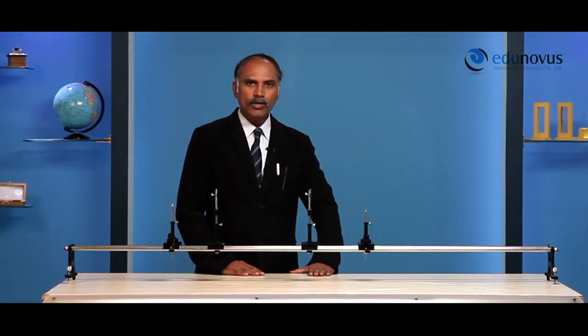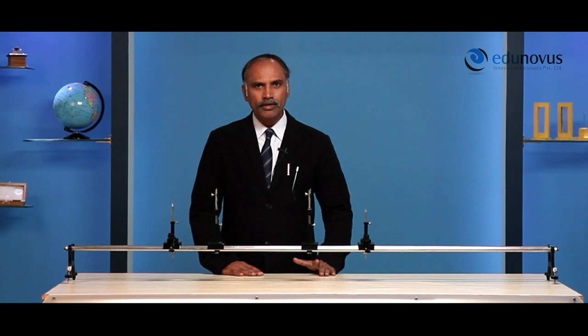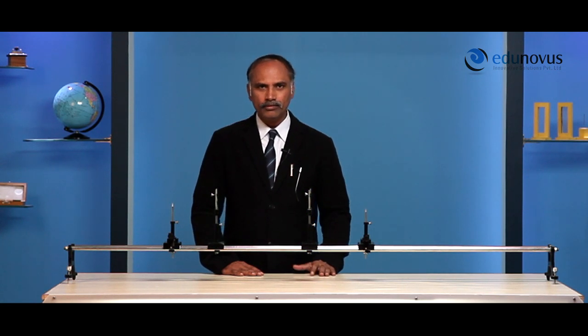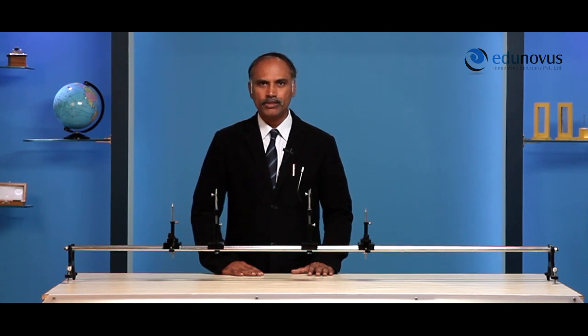As you know, a convex mirror always forms a virtual image. As it always forms a virtual image, it is impossible to determine its focal length by a direct method. So we need to take the help of a convex lens to determine its focal length. Let us get a clear picture of the arrangement of the optical bench and the procedure to perform the experiment.